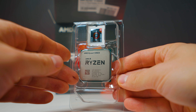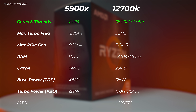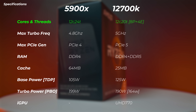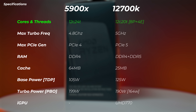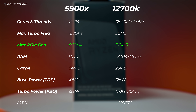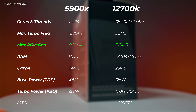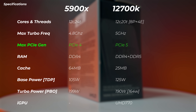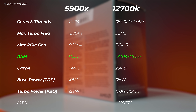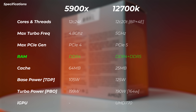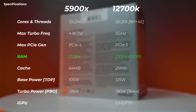Let's have a look at how these two CPUs compare on paper. Both of them are 12 cores, but the 12700K has 20 threads whereas the 5900X has 24 threads. In terms of PCIe generation, the 12700K supports up to PCIe Gen 5, but the 5900X only supports PCIe Gen 4. In terms of RAM, the Ryzen only supports DDR4, while Intel supports both DDR4 and DDR5 — though they are motherboard specific.